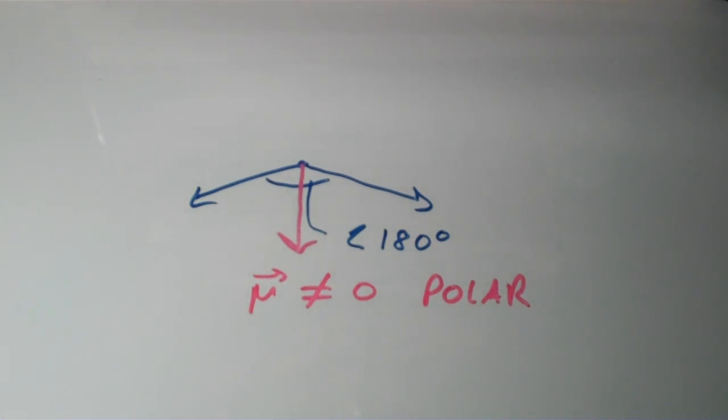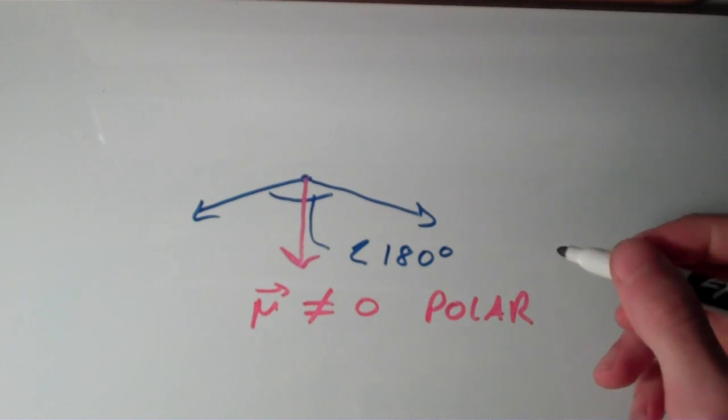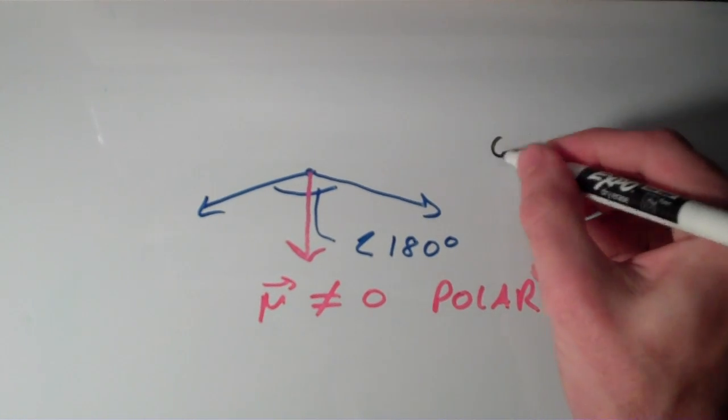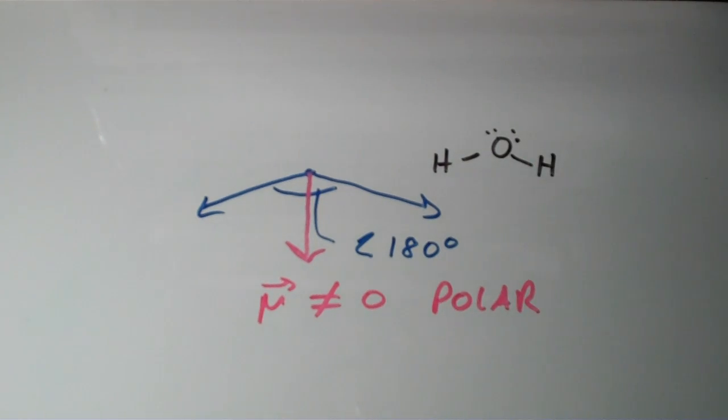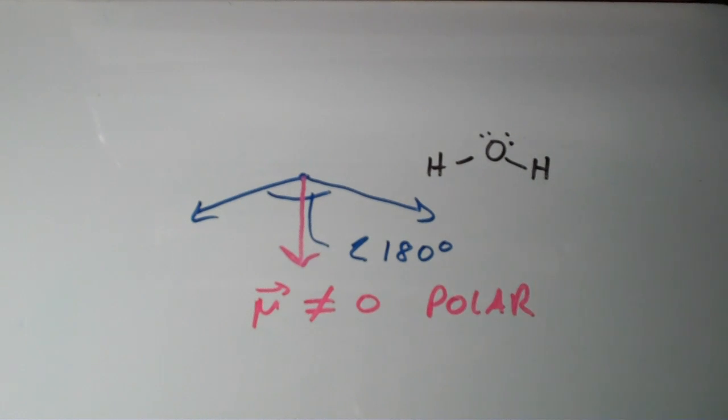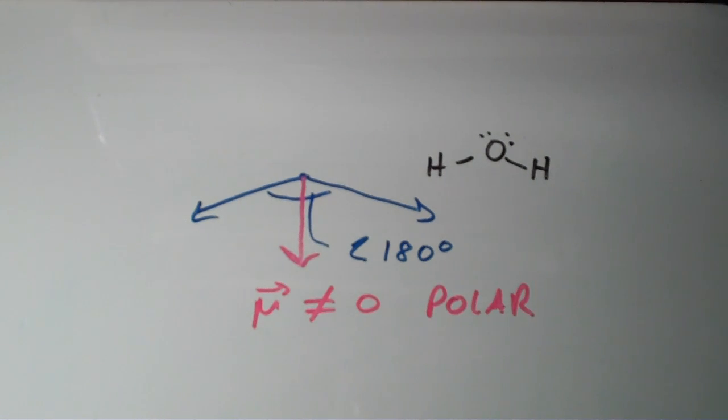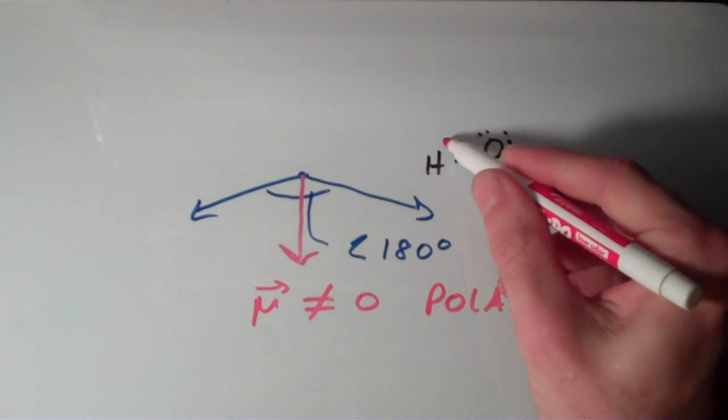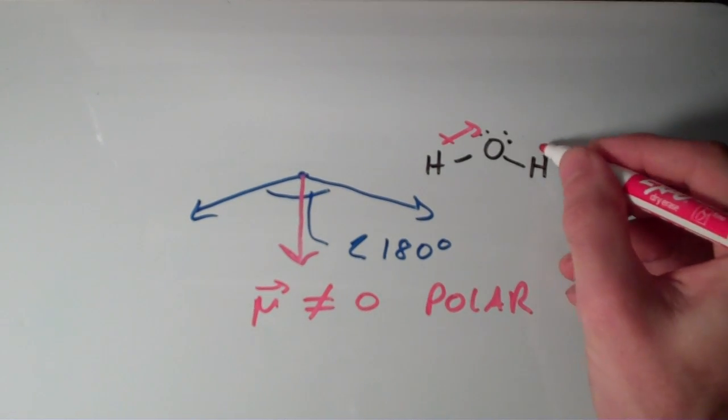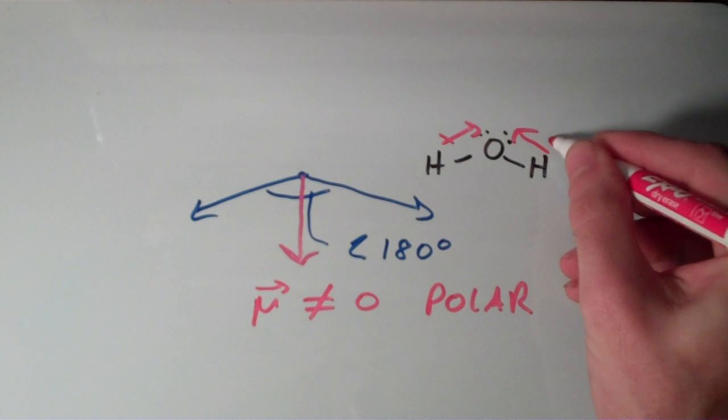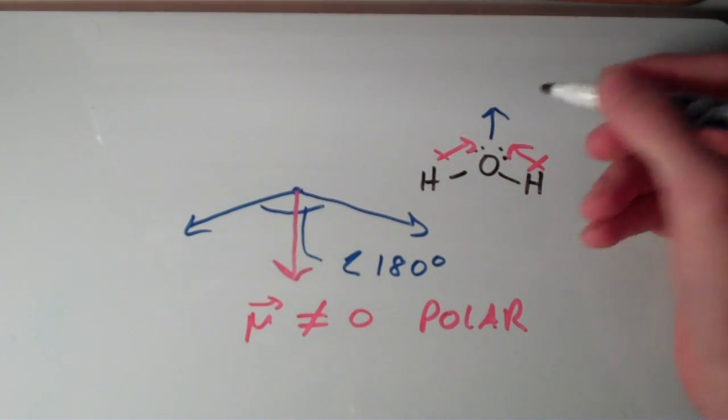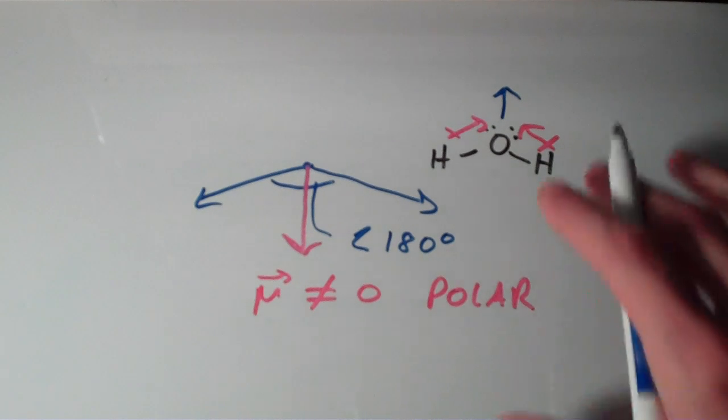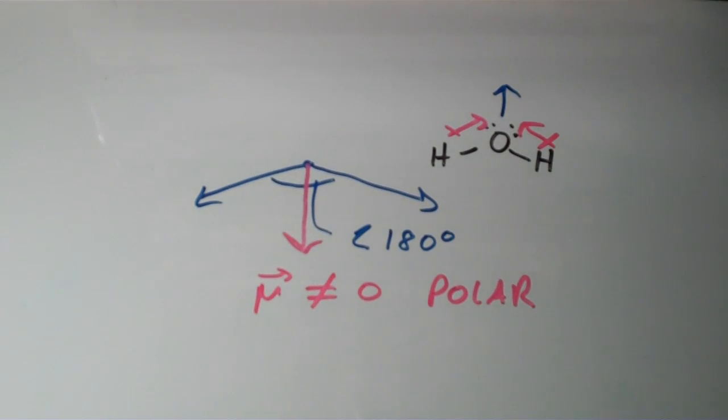So if I look at a molecule like water, for instance, H2O, H2O has two polar bonds in it, but they are pointing, they are not pointing in completely opposite directions. One's pointing this way, and the other is pointing this way. And overall, your net dipole moment is going to be probably pointing somewhere up like that, and thus water is a polar molecule.